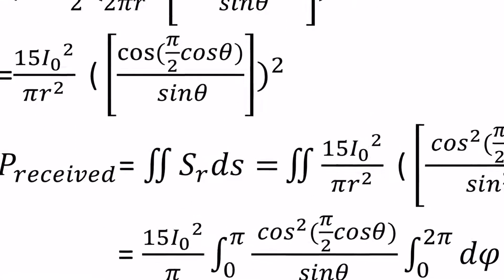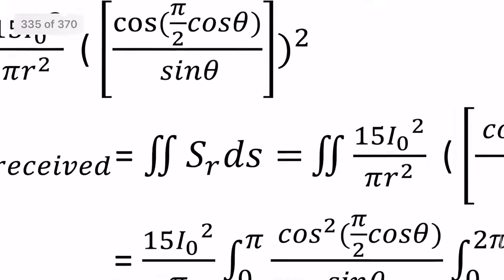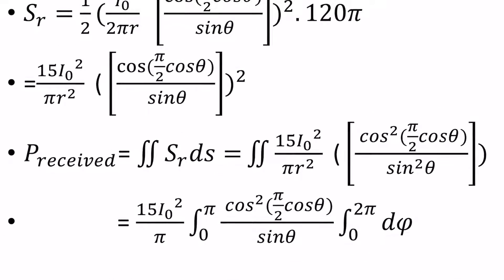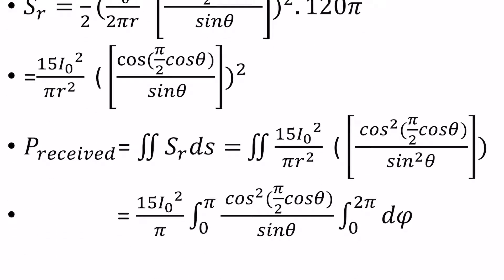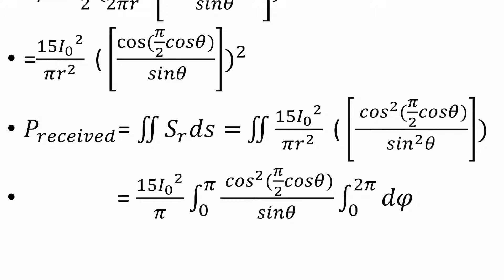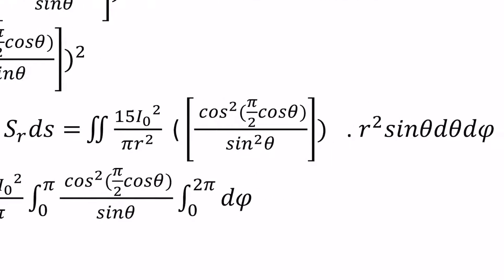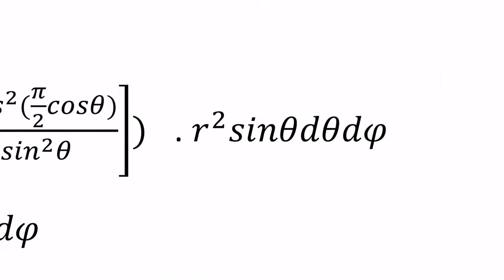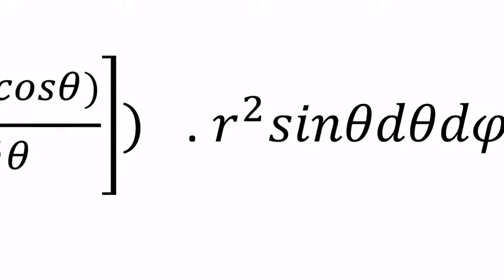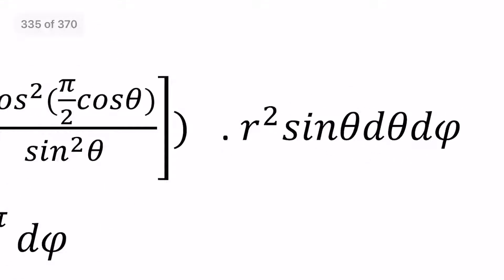Total power — we integrate the Poynting vector. The Poynting vector is the power density. We integrate it with respect to the surface element dS. dS is the differential area, which equals the differential solid angle multiplied by r².